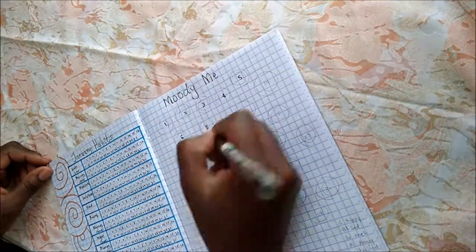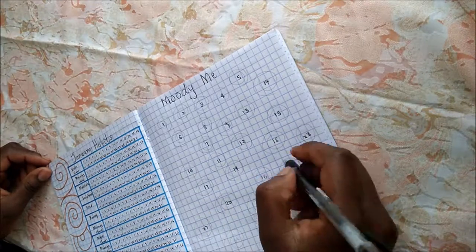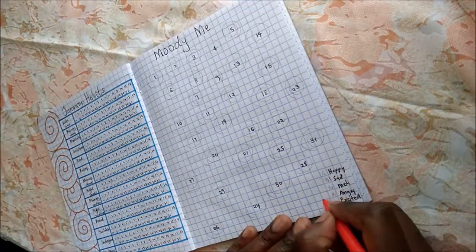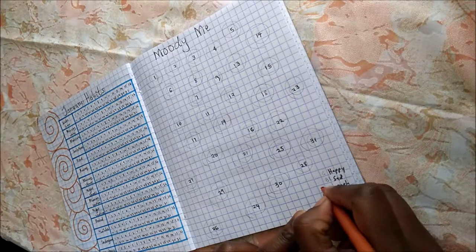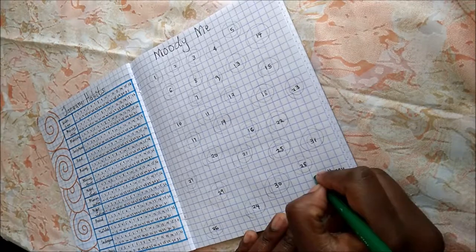For my mood tracking, I'm going for simple spirals where each will have a different color. I'll sketch them all out in pencil to represent each day. I can't wait to see the final look.